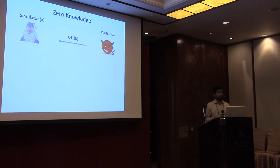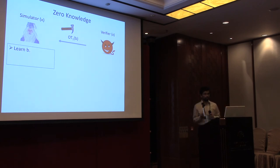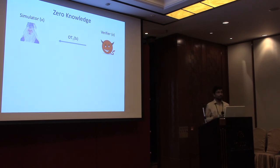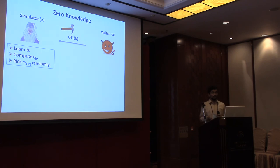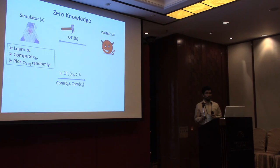Now let's see what happens for zero-knowledge. The goal is to construct a super-polynomial-time simulator that, without knowing the witness, can still simulate the verifier's view. The simulator, on receiving the adversarial verifier's OT message, breaks the OT protocol by brute force attack, learning bit b. Now knowing whether to simulate C0 or C1, it computes one of them correctly. It doesn't know the witness, but this is fine — it picks the other one randomly, since the verifier cannot learn the other one at all.